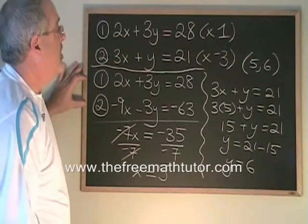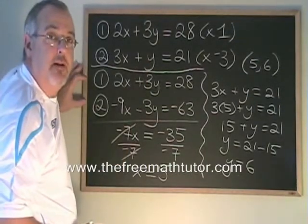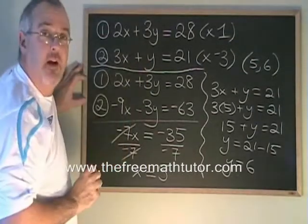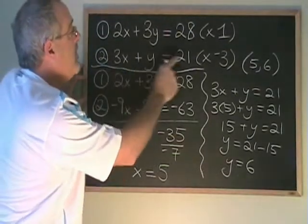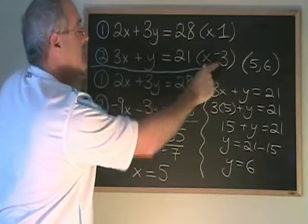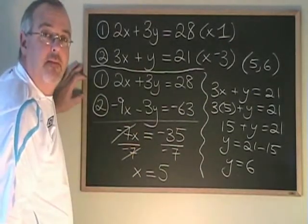So when we're doing elimination through addition, if we haven't gotten lucky and gotten an equal and opposite situation with one of our variables, we can create it by choosing a number that we multiply one of the equations by, which results in an equal and opposite situation. And then we proceed with our method.